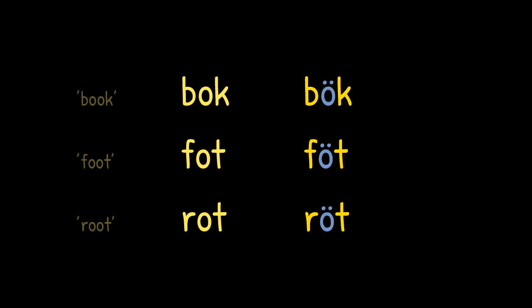The next group consists of the three similar-looking words bok, fot and rot. The only difference from the words before is that the final consonant is lengthened in the plural. So we umlaut the vowel, lengthen the consonant, and add er to get böcker, fötter and rötter.